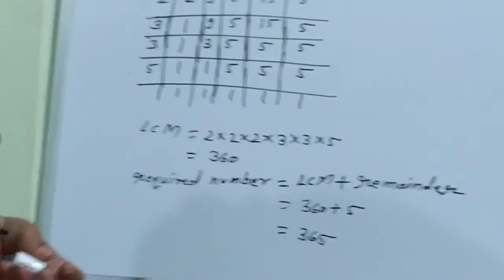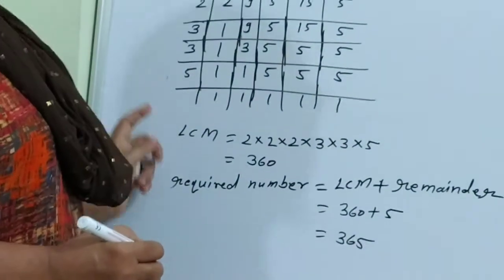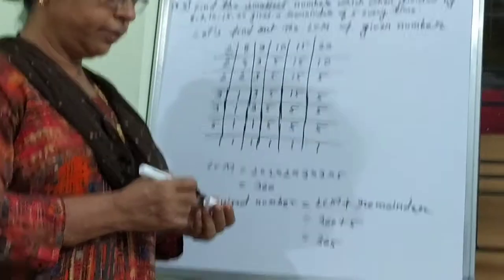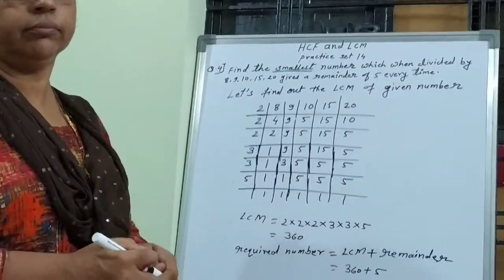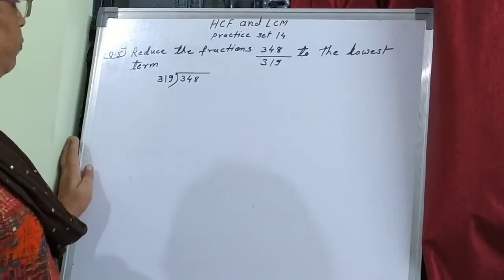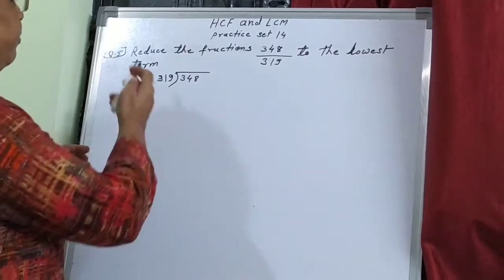So our answer is 365, and question 4 is now complete. Now we will move on to question 5.